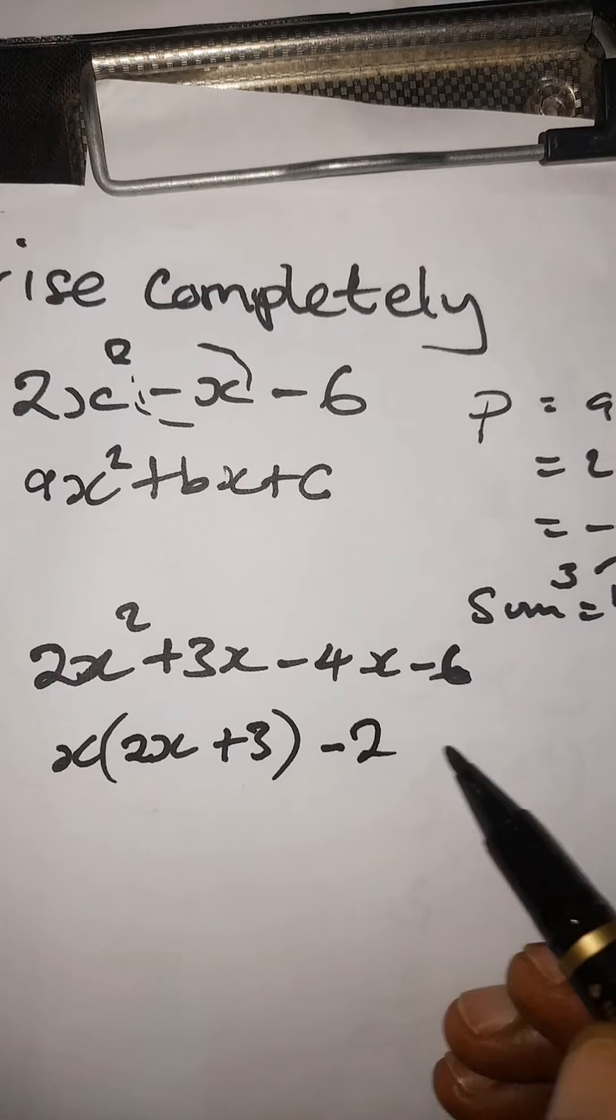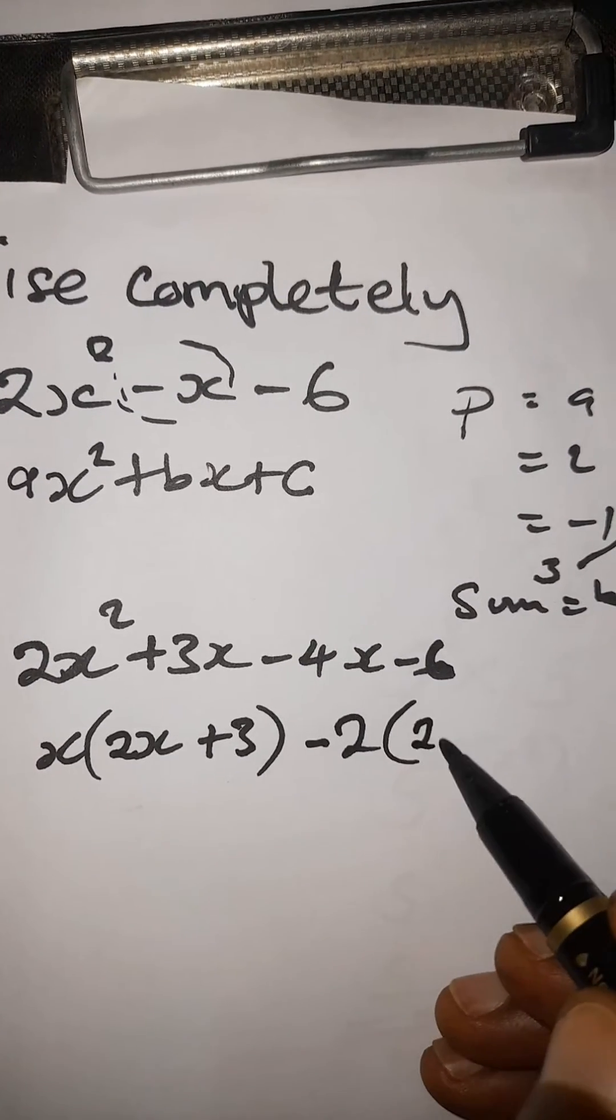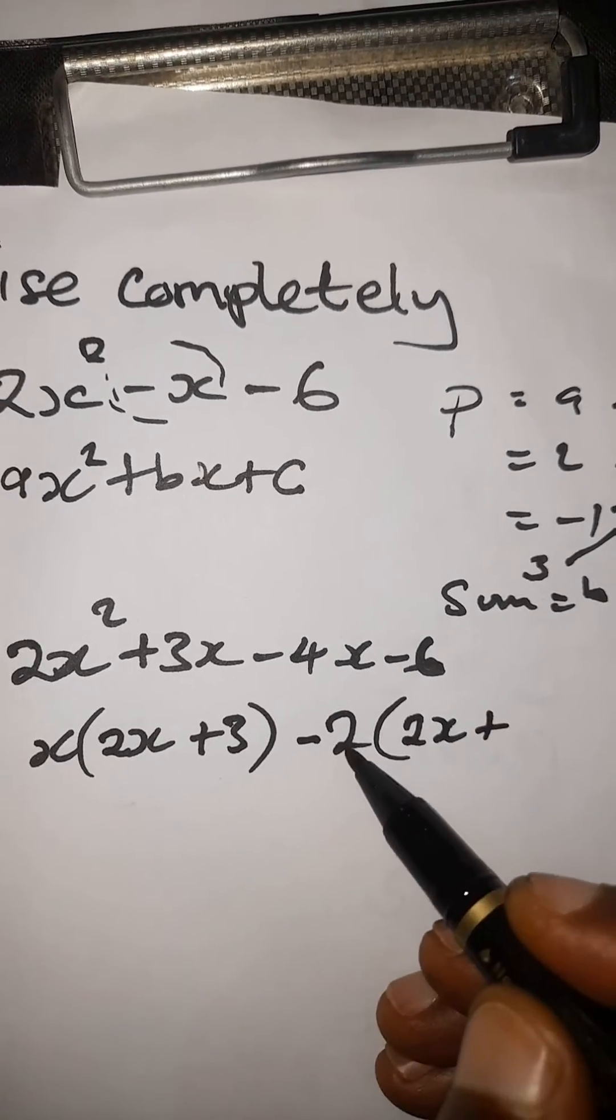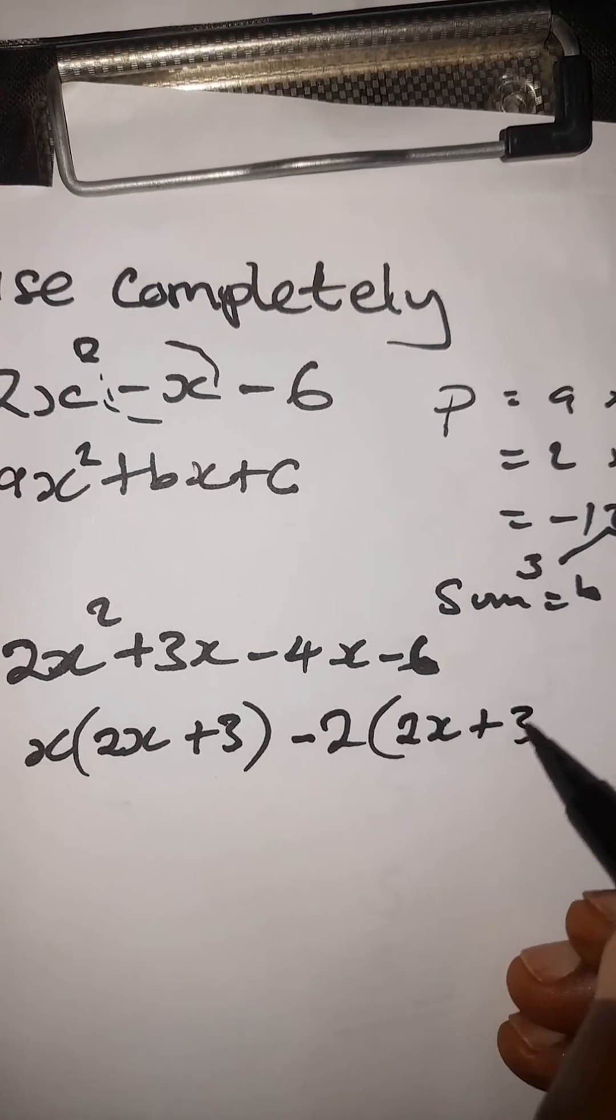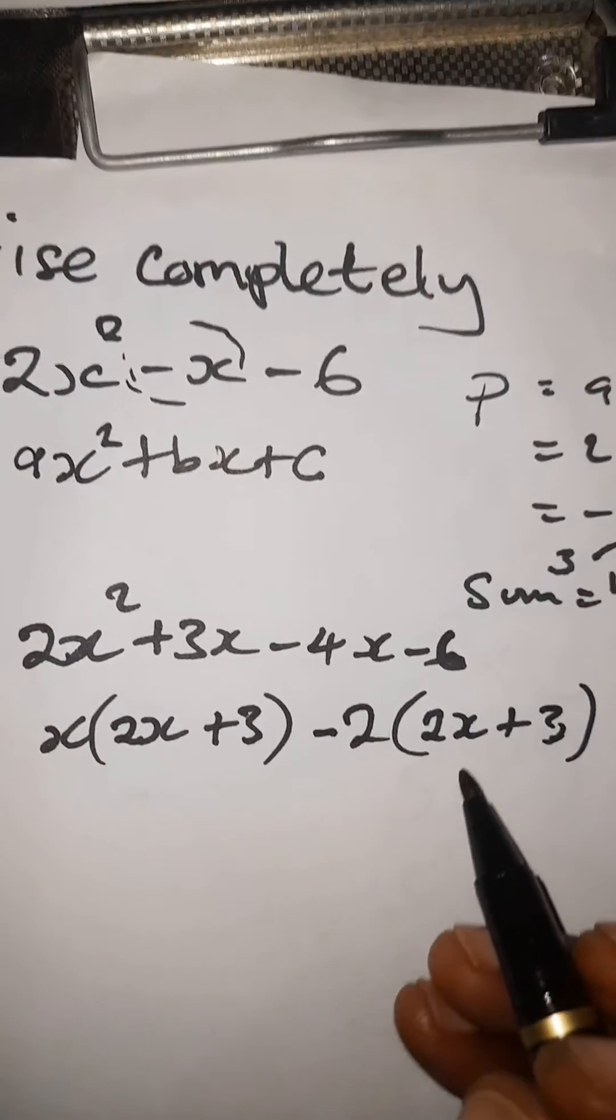The common factor here is negative 2. Negative 2 times 2x: 2x divided by negative 2 is negative x, and negative 4 divided by negative 2 is positive 2, so it's negative 2 times 2x plus 3. They are identical here, meaning we are doing the right thing.